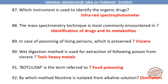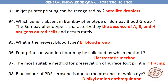Wet digestion method is used for extraction of toxic heavy metals from viscera. Botulism is the term referred to food poisoning. By which method is nicotine isolated from alkaline solution? Distillation. Inkjet printer printing can be recognized by satellite droplets. Which gene is absent in Bombay phenotype or Bombay blood group? The Bombay phenotype is characterized by the absence of A, B and H antigens on red cells and occurs rarely.